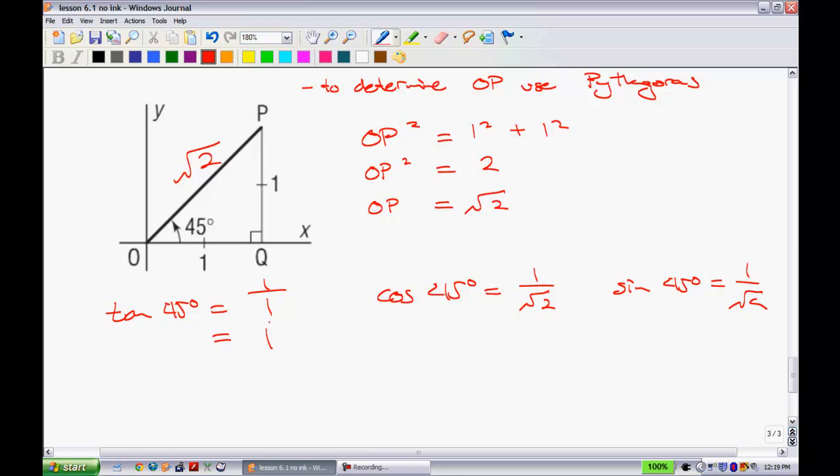So these represent the exact value trigonometric ratios for this triangle, where we have side lengths that are equal to one unit, and we have a hypotenuse that is root two. This concludes this lesson.